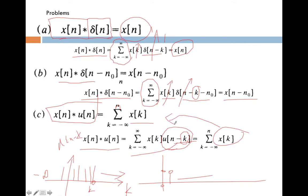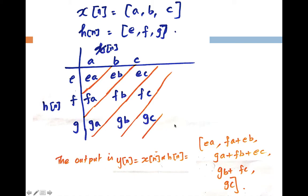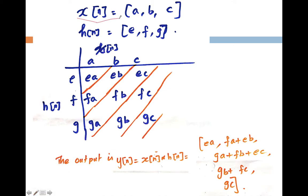We can determine convolution summation in three different ways: one is the graphical way, another is the mathematical or analytical way, and the third is the tabular way. For the tabular method, take two sequences x of n defined as a, b, c and h of n defined as e, f, g. We can easily find the convolution of these two finite sequences using the tabular format.